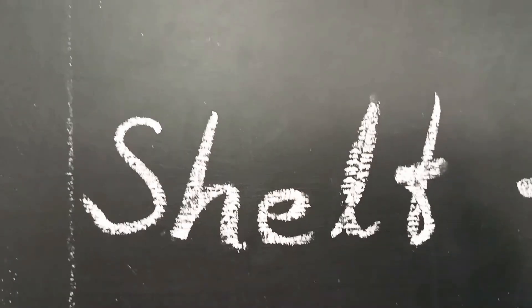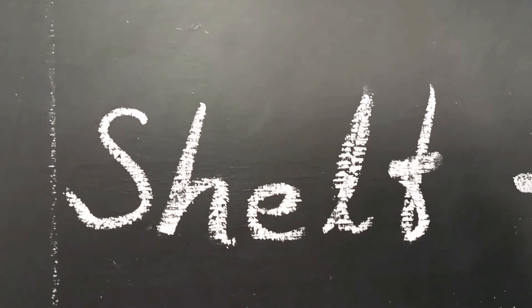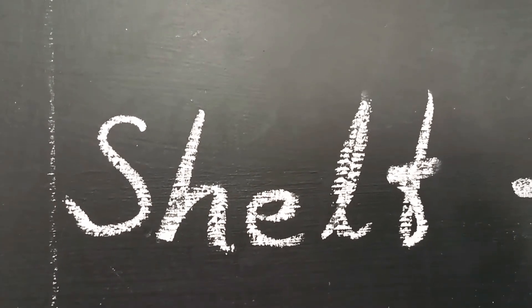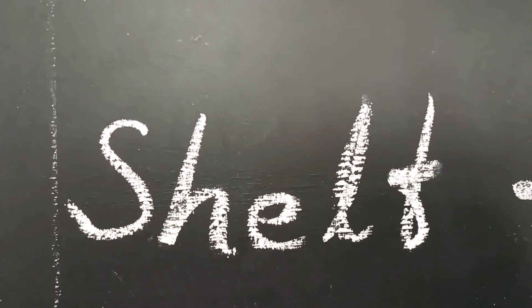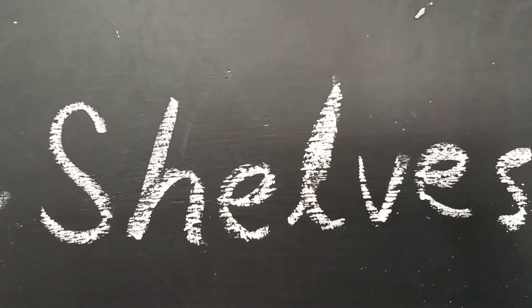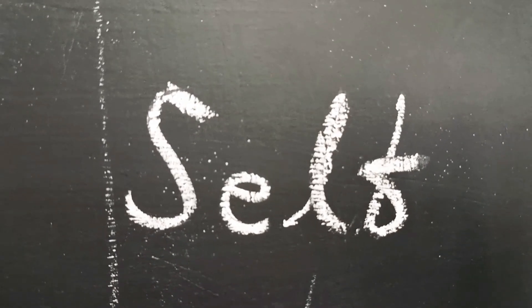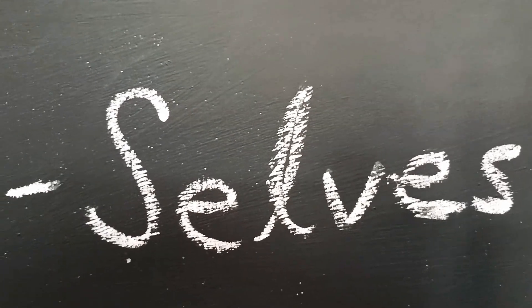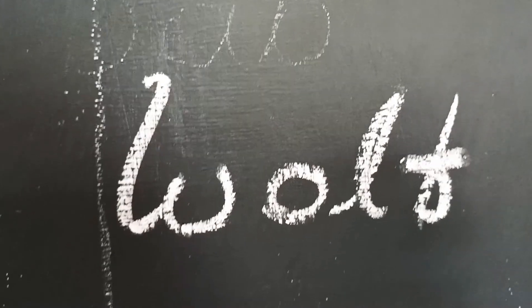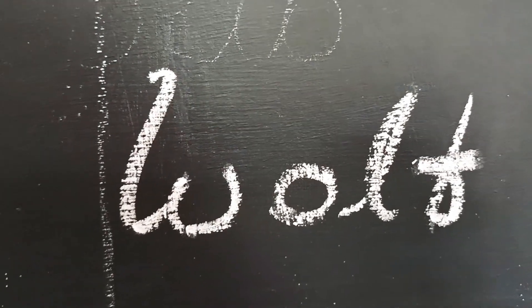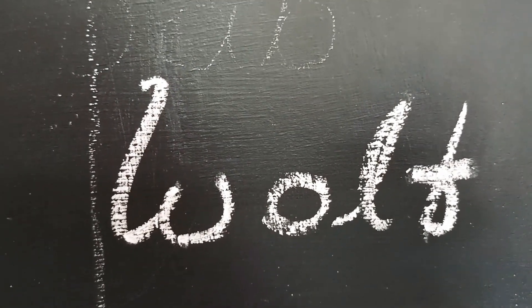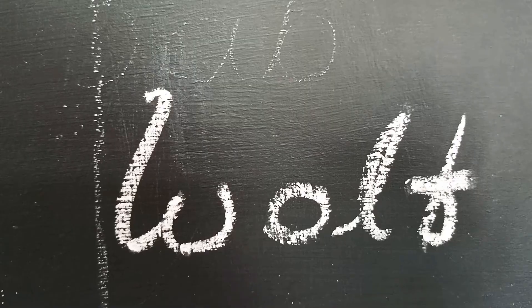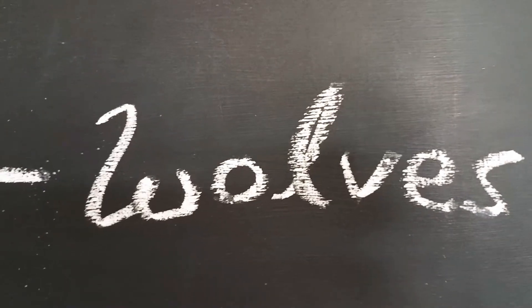If the last alphabet is F, remove F and suffix VES. Self: the last alphabet is F — remove F and suffix VES. Wolf: the last alphabet is F — remove F and suffix VES.